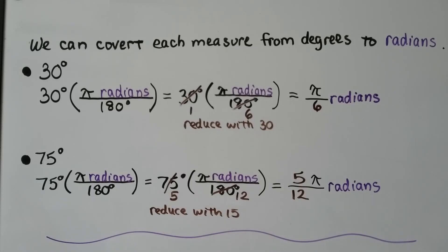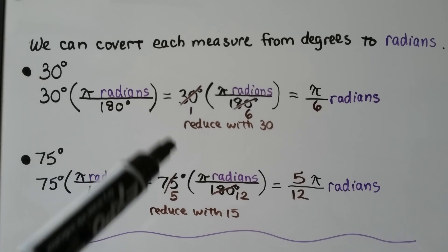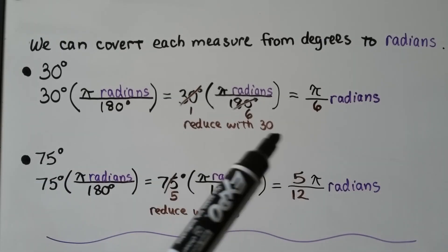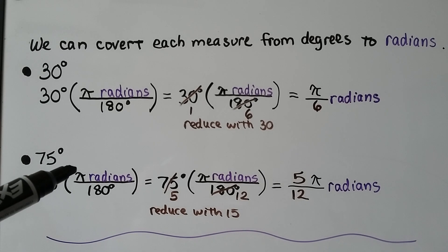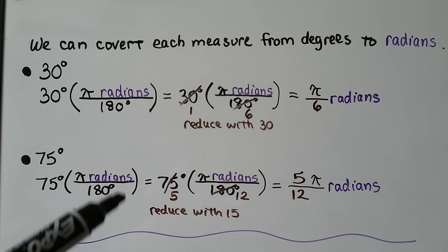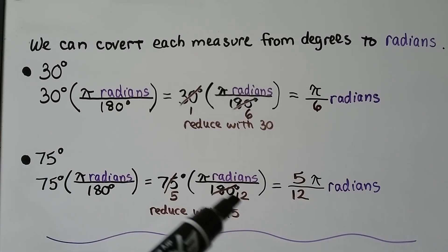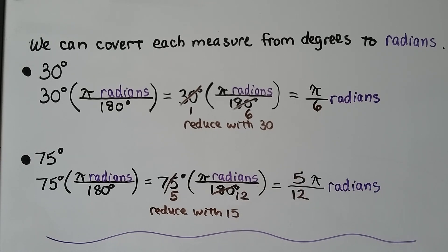Let's convert each measure from degrees to radians. For 30 degrees, we multiply 30° by (π radians / 180°). We can reduce with 30 — that becomes a 1, that becomes a 6 — and we're left with π/6 radians. For 75 degrees, we multiply by (π radians / 180°). We reduce with 15, getting 5 and 12, so we're left with 5π/12 radians.